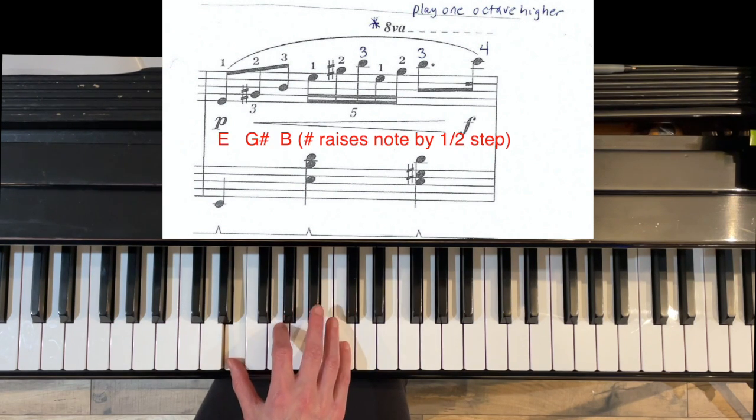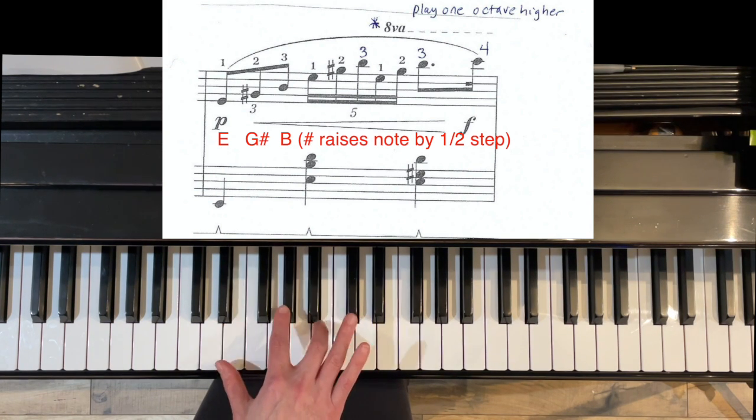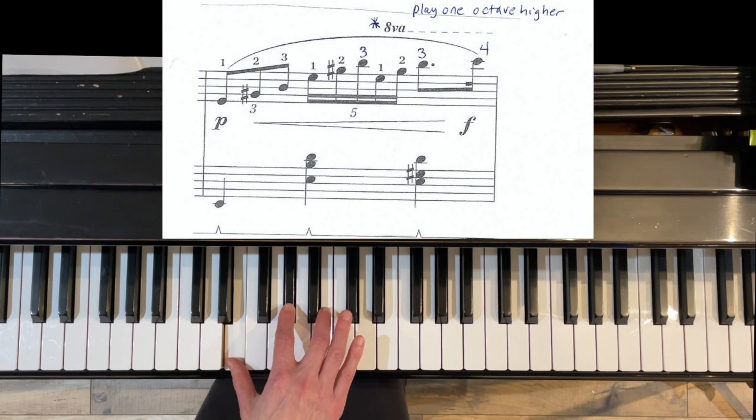We've got an E, we've got a G sharp. So when you see that little sharp symbol, instead of playing this note, you're going to play the note a half step higher. So your hand feels a little bit stretched out for this E chord: E, G sharp, B.